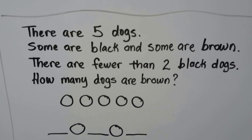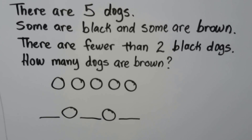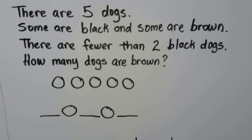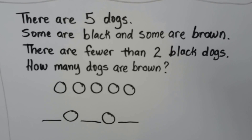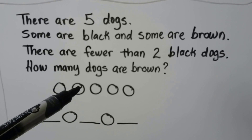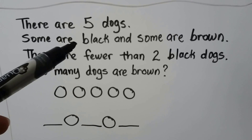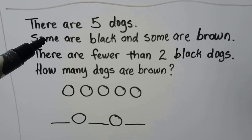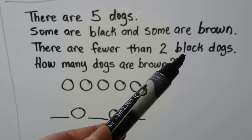There are five dogs. Some are black and some are brown. There are fewer than two black dogs. How many dogs are brown? Let's take this one step at a time. There are five dogs, so we make five circles: one, two, three, four, five. Some are black and some are brown, but it didn't tell us how many. There are fewer than two black dogs.